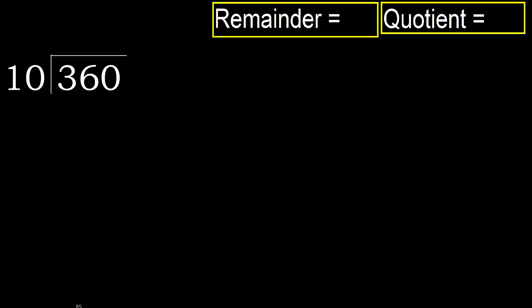360 divided by 10. 3 is less, therefore next. 36 is not less, therefore with 36.